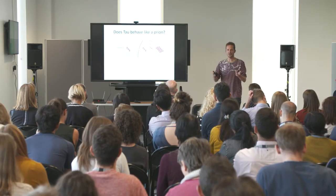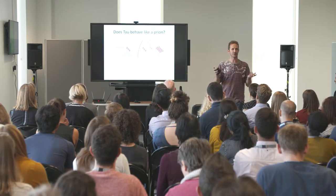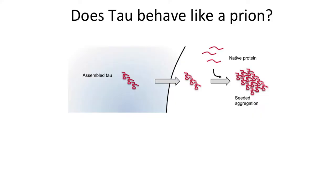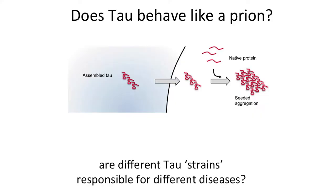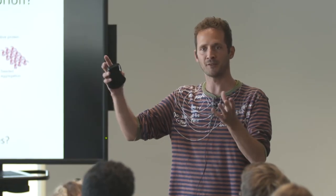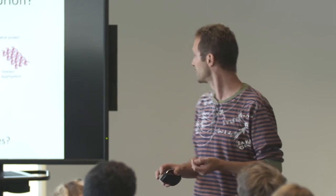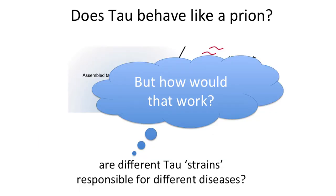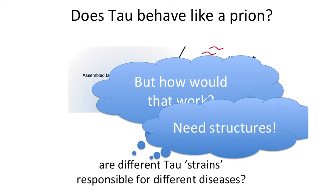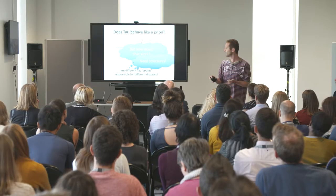That is reminiscent of the prion hypothesis for prion diseases. The question then is: does tau behave like a prion? In prions, you have the concept of prion strains, where different conformations of the same protein lead to different types of filaments, which each can lead to different forms of disease. How that would work was completely unclear for tau, and we thought structural biology — looking at the three-dimensional arrangements of atoms in the protein — might be of help.